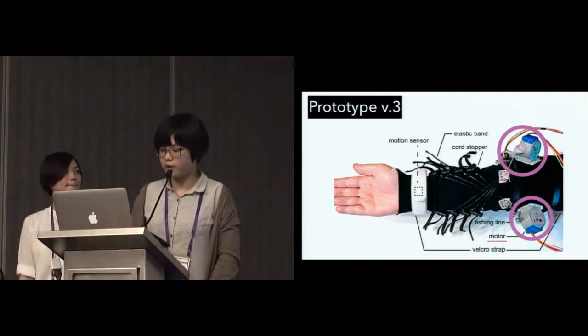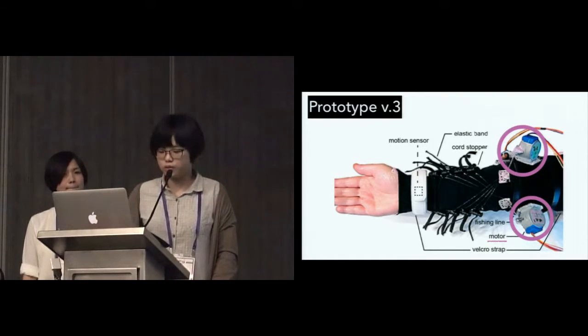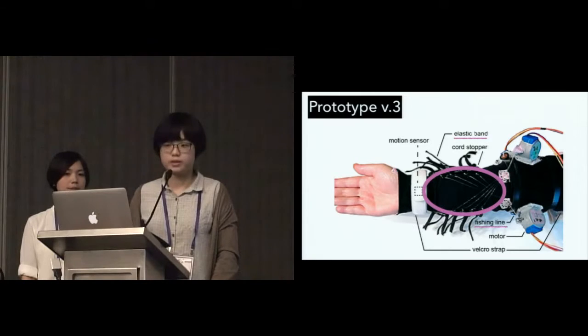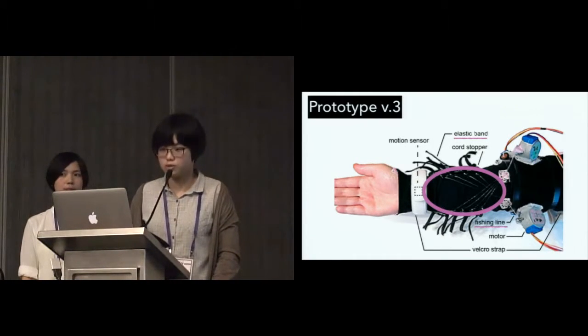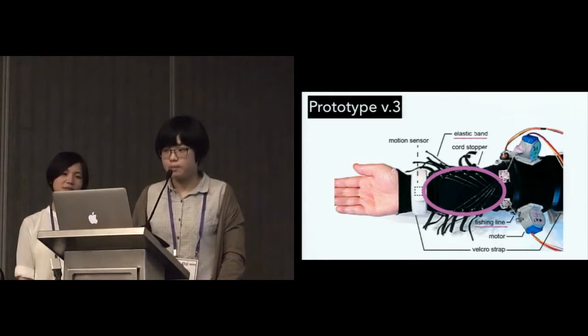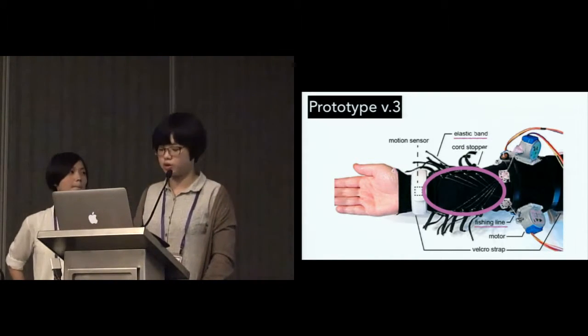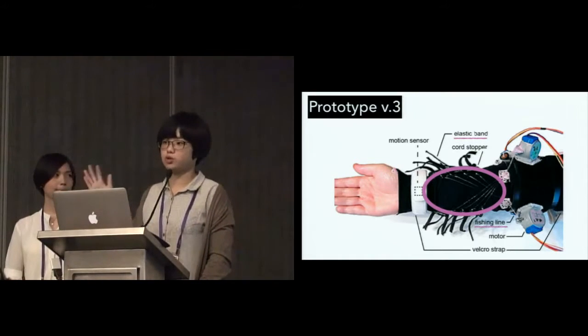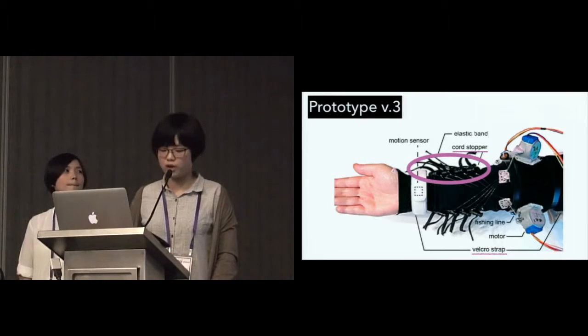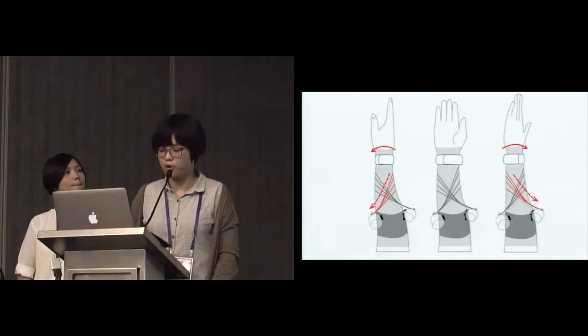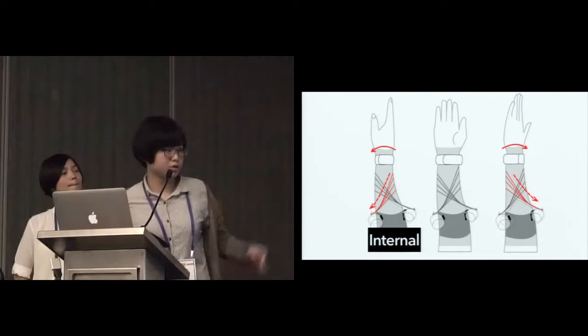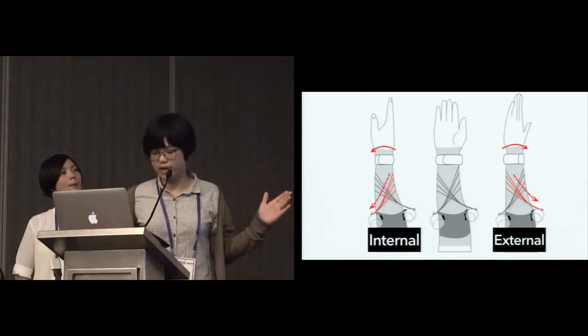In this prototype, artificial muscles are driven by stepper motors attached to the sleeve near the elbow instead of the wrist. There are eight artificial muscles in both the inner and outer sides of the arm with each of four artificial muscles crossed. Each consists of an elastic band connecting to a fishing line. By pulling different artificial muscles can cause different muscular contractions, which leads to forearm external rotation or internal rotations. We also use cord stoppers and velcro straps to adjust the sleeve to fit the arm of different people. By contracting different muscle groups can cause either internal rotation of the arm or external rotation of the arm.